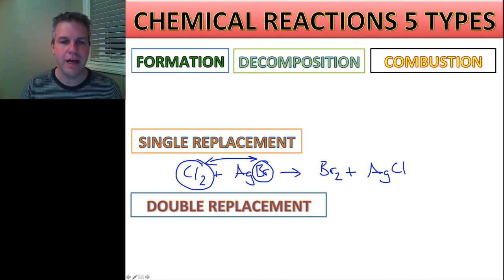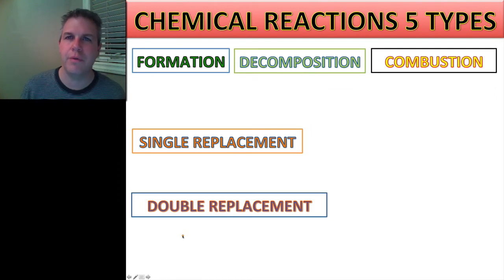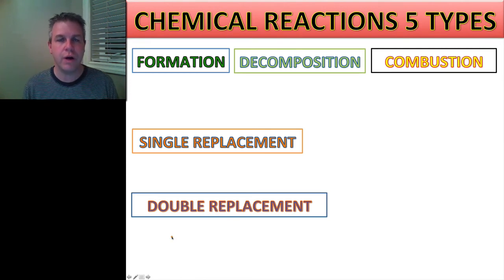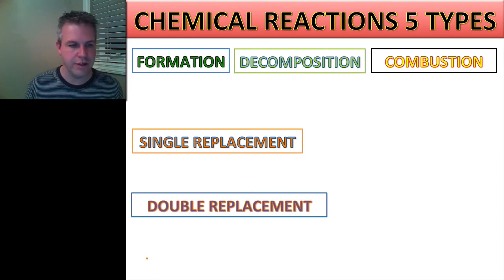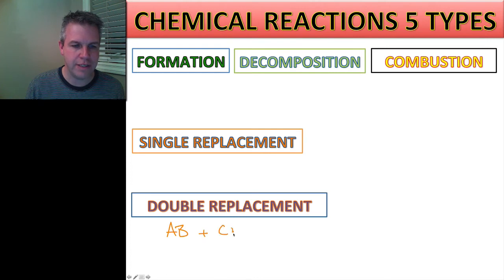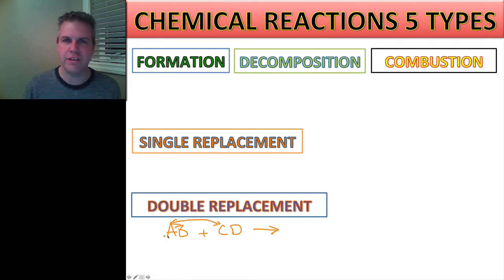So a double replacement reaction now is very similar to a single replacement reaction, except now we have two compounds that are going to exchange ions. So how does that look? Well, I have AB plus CD, and that is going to yield something. So again, I'm going to take these two positive ions - because they're listed first - and I'm going to switch them around. So that will give me AD.